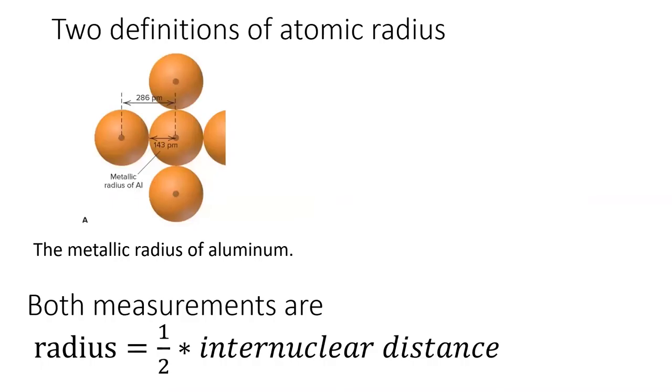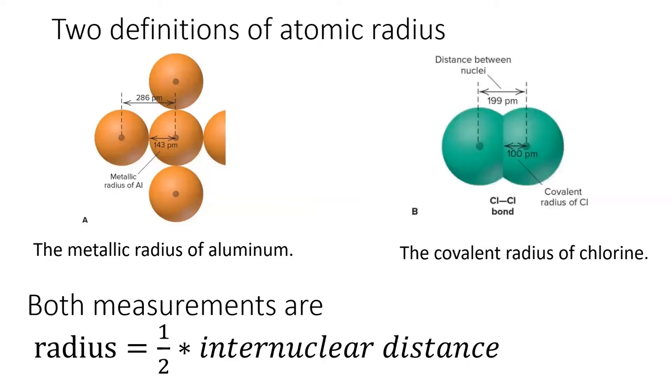There are two main ways we measure atomic radius. In metallic elements, we take their distance between nuclei and divide it by two. In covalent elements, we take the length of the covalent bond and divide it by two.